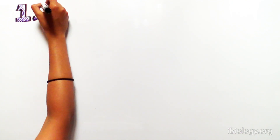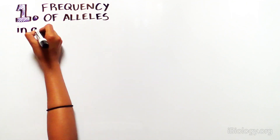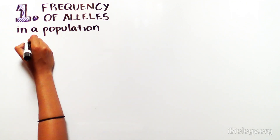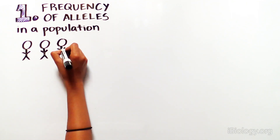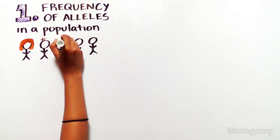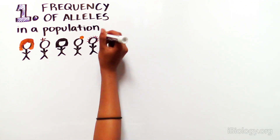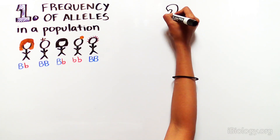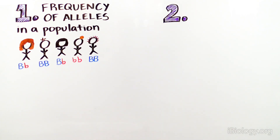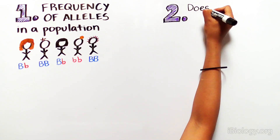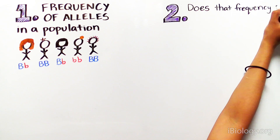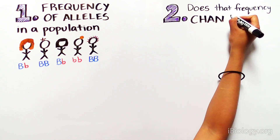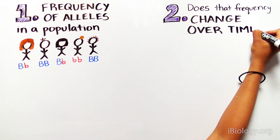They were interested in understanding: one, what is the frequency of specific alleles in a population — so what fraction of the total number of alleles are dominant (capital B) or recessive (lowercase b) — and two, as the organisms mate and have offspring over many generations, whether the frequency of those alleles changes over time.